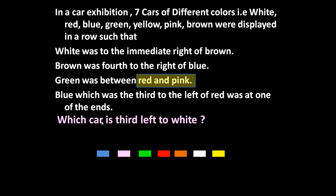Now the given question is: which car is third left to white? This is white. This is left side of white—one, two, and three. So green is the third left to white.